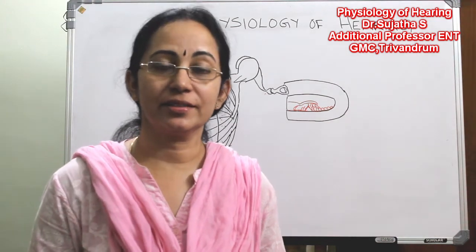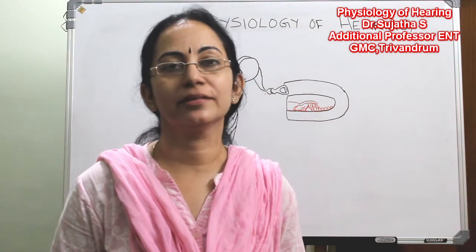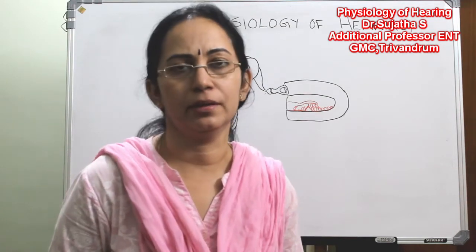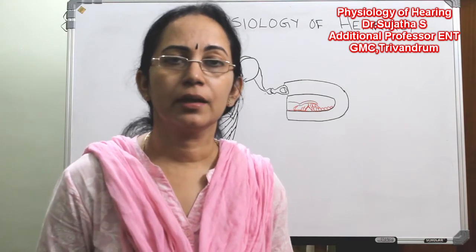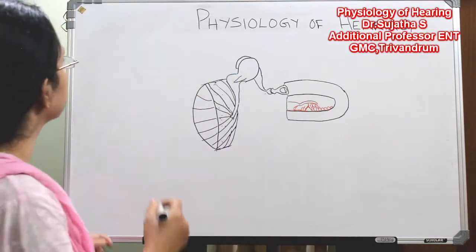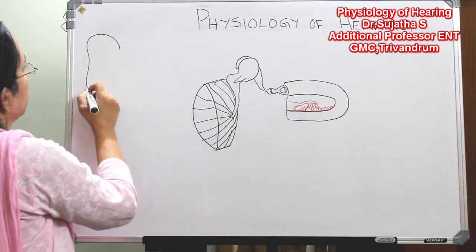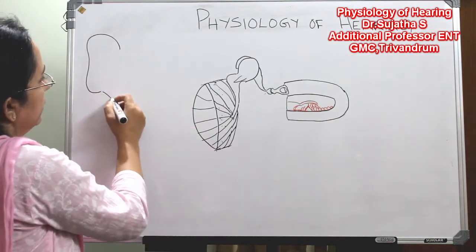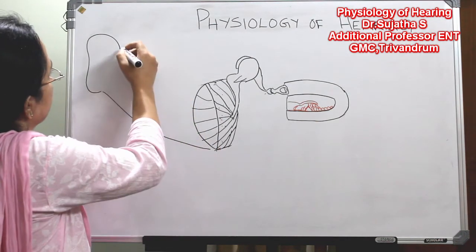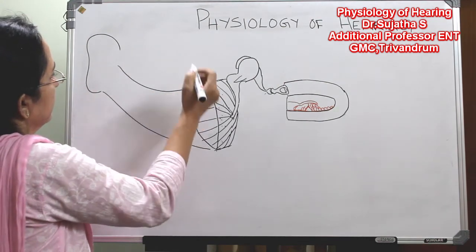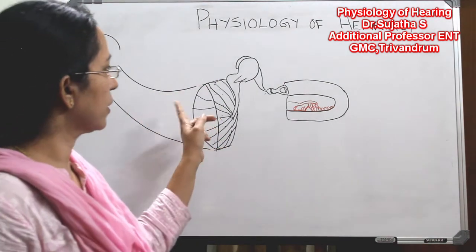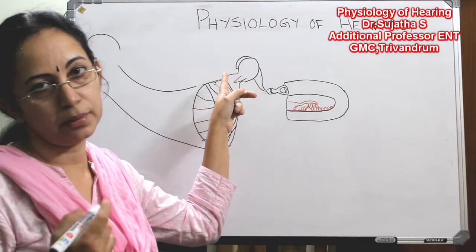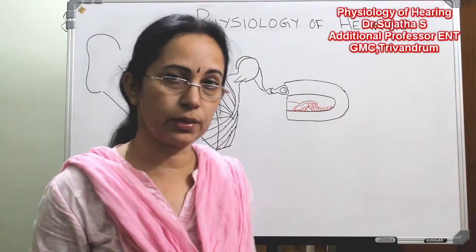The physiology of hearing seems a bit complicated, but with thorough knowledge of the anatomy of the ear it becomes very simple. The pinna collects the sound signals and transmits them to the external auditory canal, causing vibrations of the tympanic membrane. These vibrations go through the malleus and incus — that is the ossicular assembly.